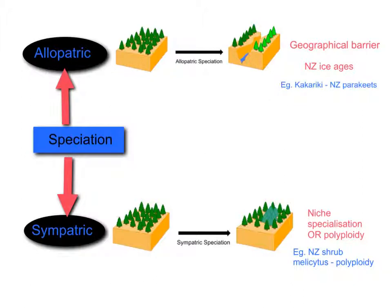An example of allopatric speciation in New Zealand is the kakariki — the parakeets found on many offshore islands. They all come from a similar origin but, because they are located on different islands as well as the mainland, they have had slightly different selective pressures and have evolved into different species, such as the red-crowned and yellow-crowned parakeet. Though technically they could be subspecies since we don't know if they could interbreed if relocated together, we refer to them as different species. Allopatric speciation is generally the most common type of speciation involving animals.